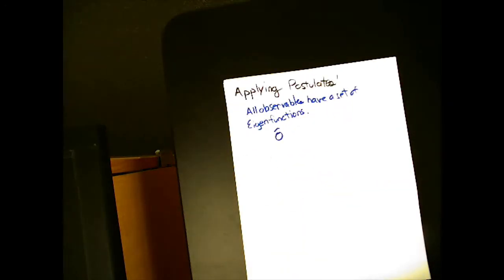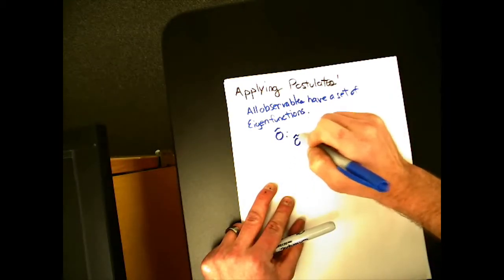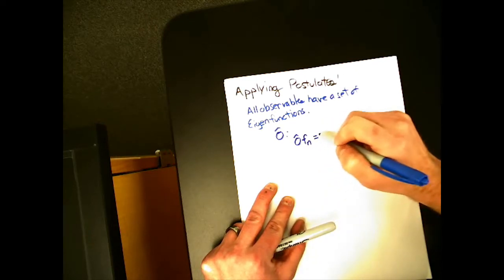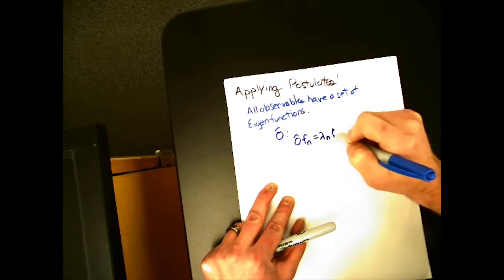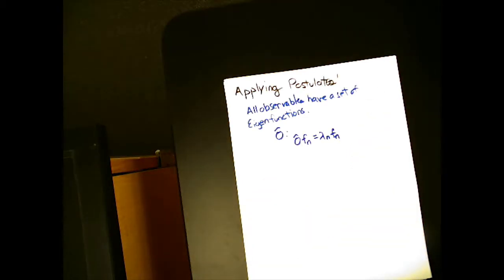there will be a set of functions such that O operating on one of those special functions returns a number times that special function. Our eigenvalue equation.